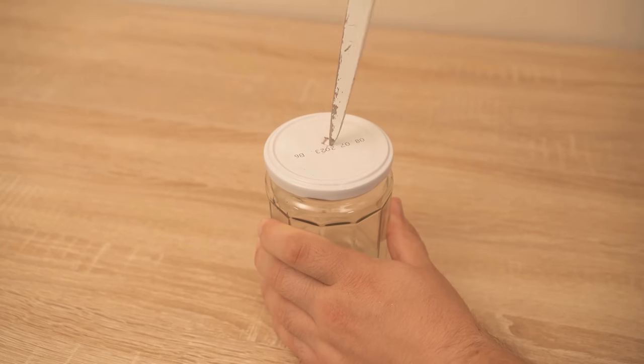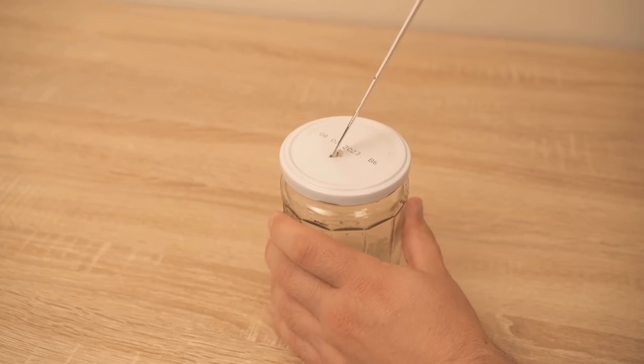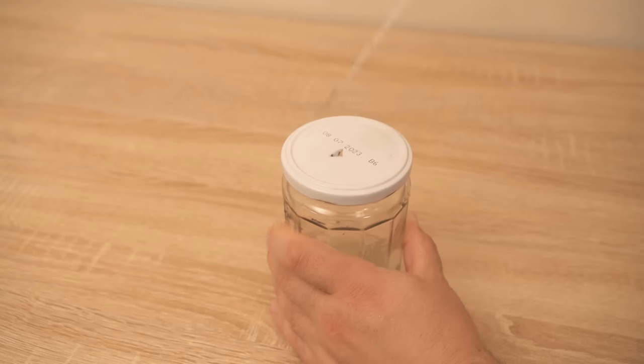This is the first step for our self-made fly trap. When you have cut the hole it should look like this and it should be big enough for the flies to get in.